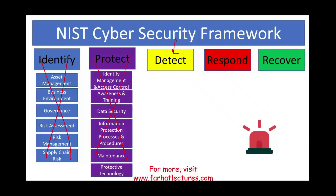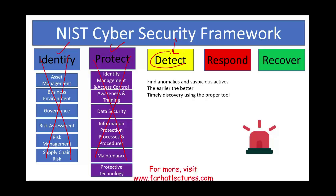What's the overall idea for the detect function? We are looking for anomalies and suspicious activities. First, we identified our assets — those that we need to protect. We installed protection. Now an individual that's trying to hack us may be inside. We need to know how we're going to detect this. We're going to look for anomalies and suspicious activities, because the earlier you can detect those activities, the faster you can respond. Timely discovery using the proper tool is important. Simply put, the detect function is like an alarm system — you are raising the alarm.